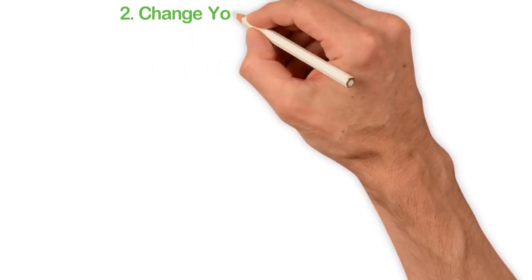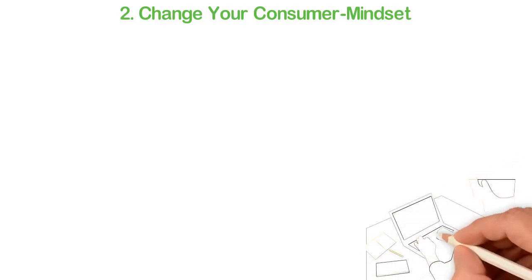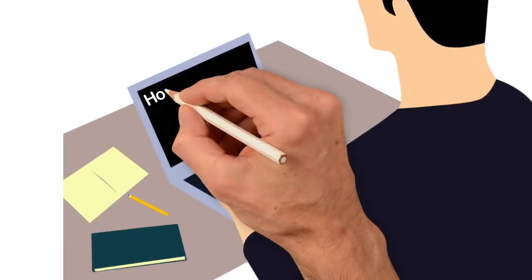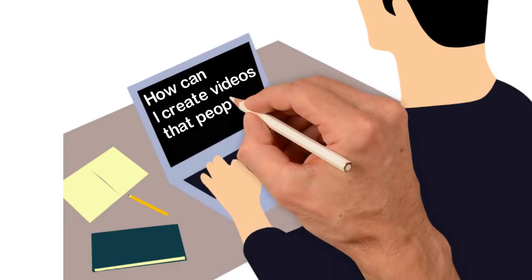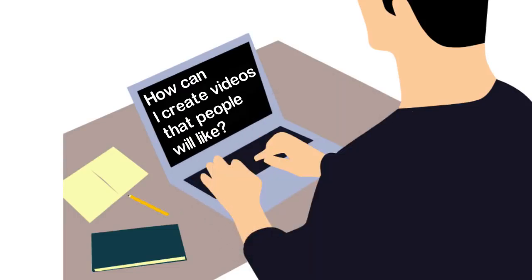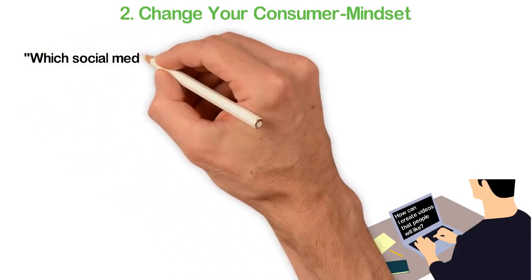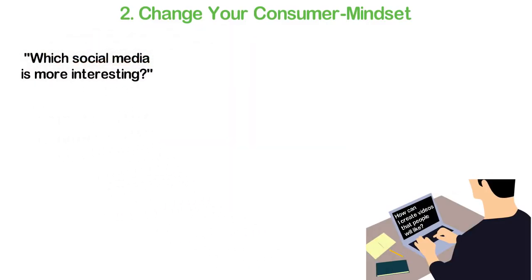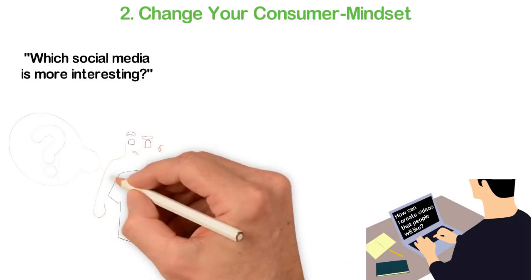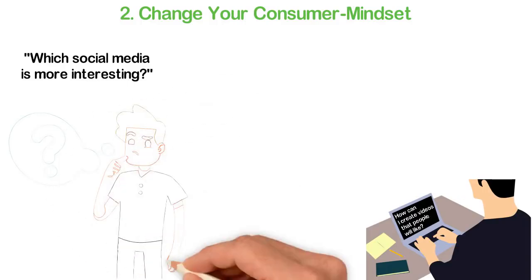Number two: Change your consumer mindset. When I got to know about Facebook, my first concern was: can I sell through it? When I got to know about how popular YouTube is, my first question was: how can I create videos that people would like? Consumers don't think that way. Instead, they think: which social media is more interesting? Theirs is to consume, so they are not thinking of how to serve people and make money from them.